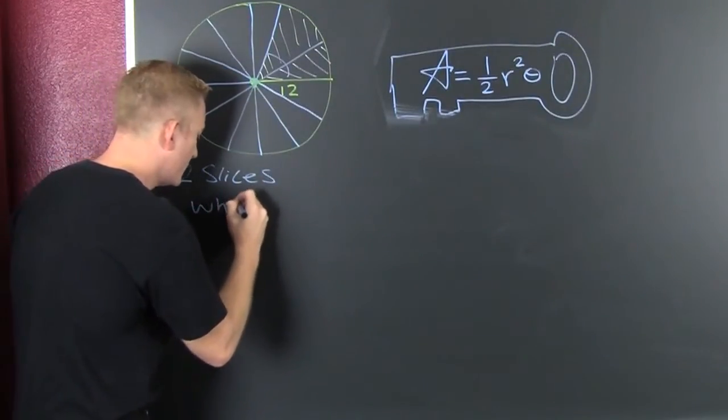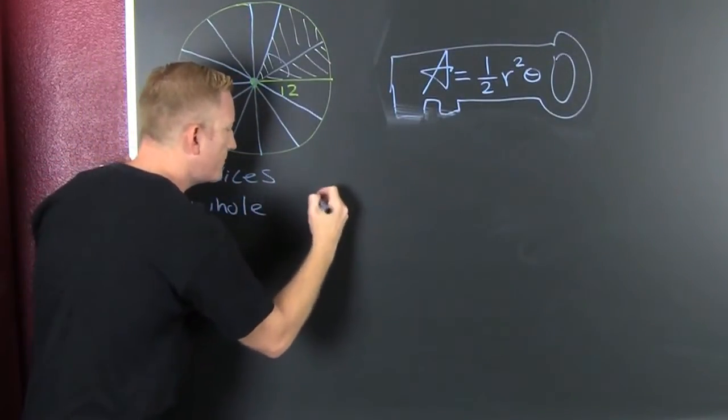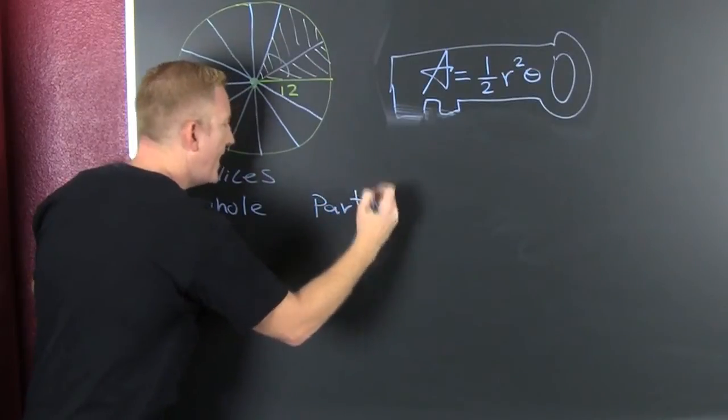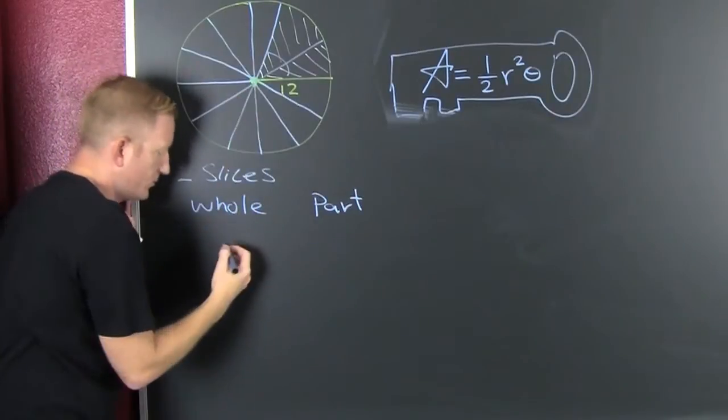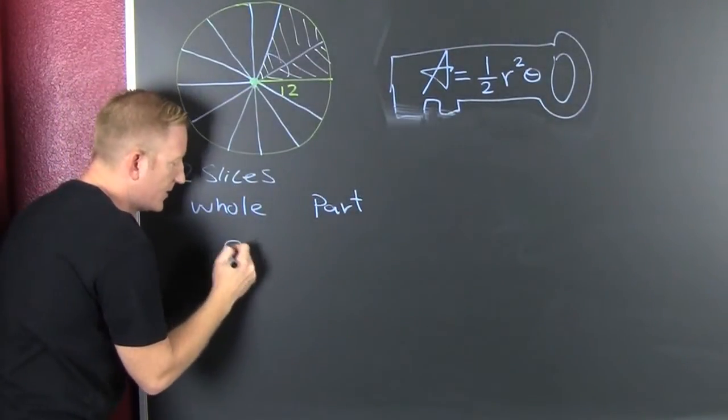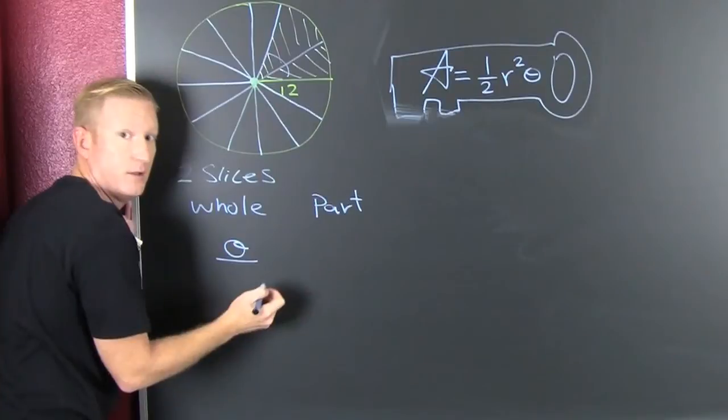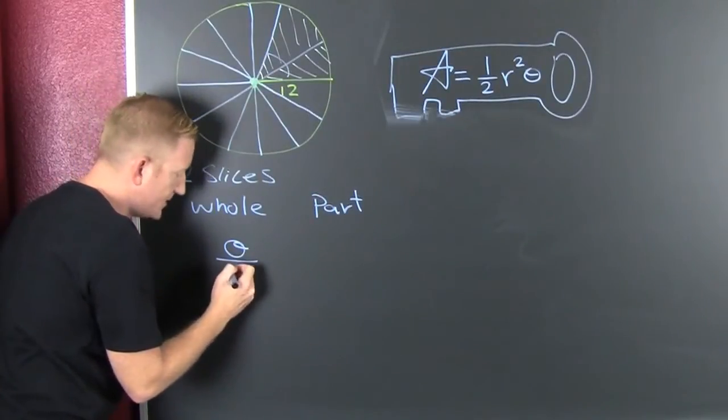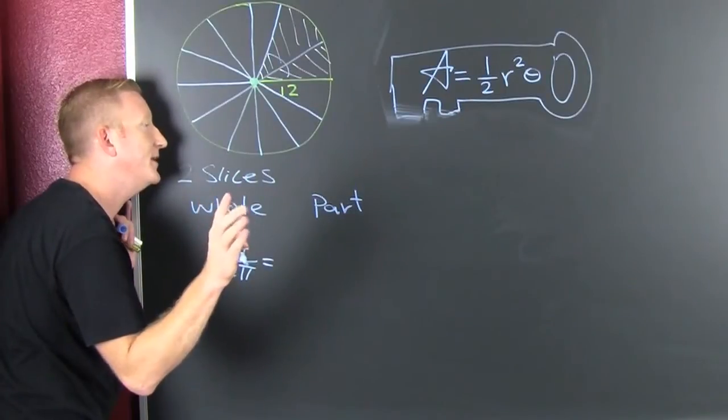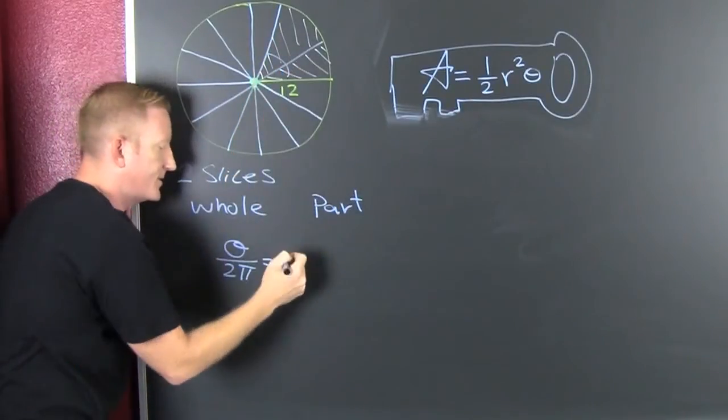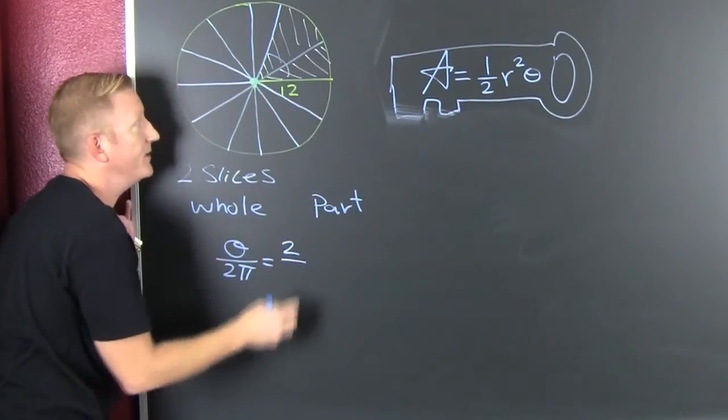It's the whole to the part. We're trying to find this piece. Theta is to 2 pi as... Wait for it! We had 2 slices out of how many?